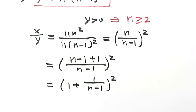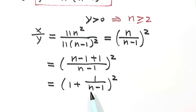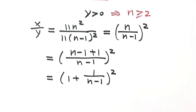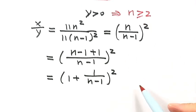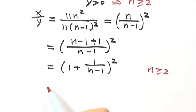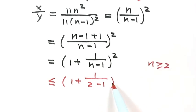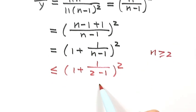Since we want the maximum value of x over y, and the expression (1 plus 1 over (n minus 1)) squared decreases as n gets bigger, we should take the smallest possible value of n. Since n is greater than or equal to 2, taking n = 2 gives x over y less than or equal to (1 plus 1 over 1) squared, which equals 4.